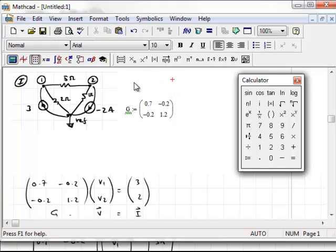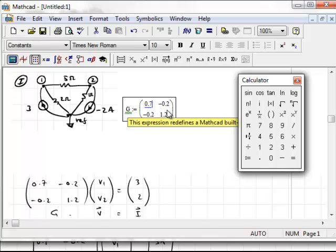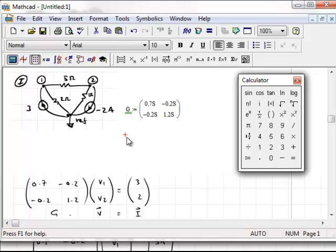One of the powerful things about Mathcad is that it has units built into it. And so, for instance, if we were to put units to G, remember G is a conductivity matrix, so it's 1 over resistance, the units of conductivity are Mohs or Siemens. So if I just type S, capital S, after each of these, I'm now giving these entries units.